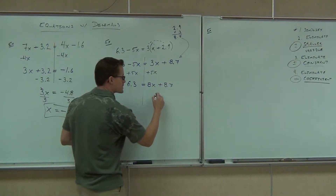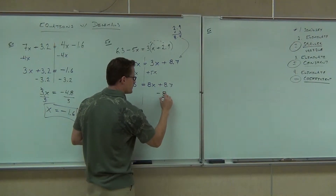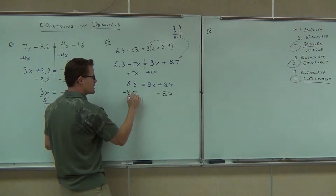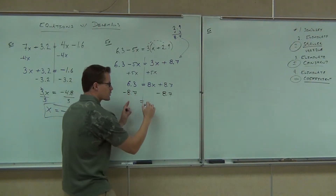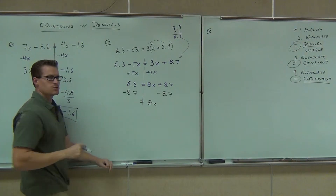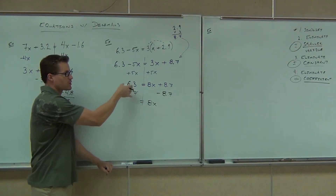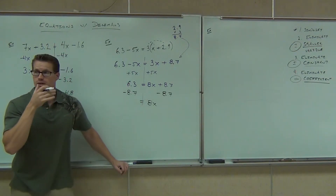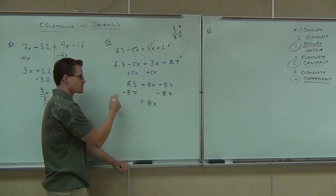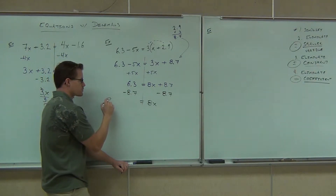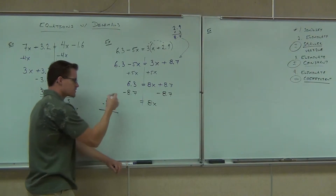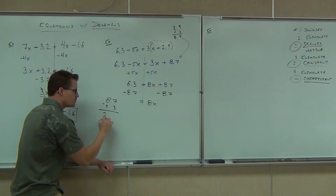We're going to try to get rid of the 8.7 by subtracting that from both sides. If you subtract it on the right, we're going to be left with 8x. On the left, you're going to have to do some work. We have 6.3 minus 8.7, and we'll use the addition rule for different signs — we subtract — and you get 2.4.